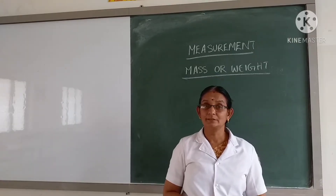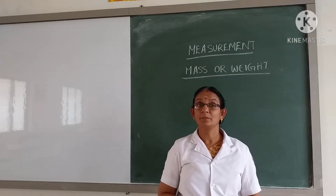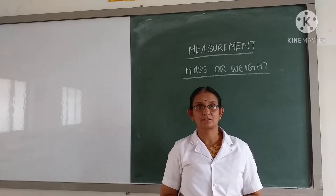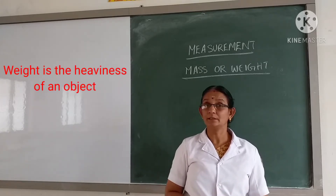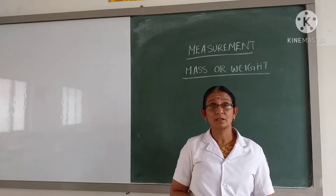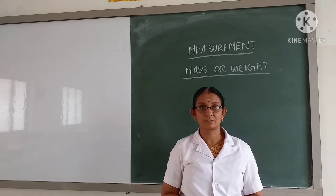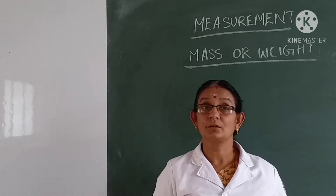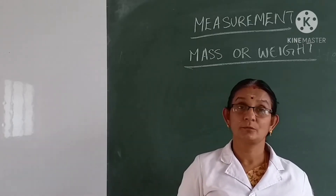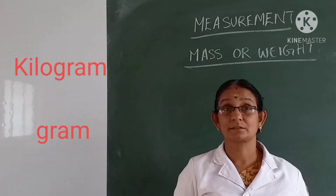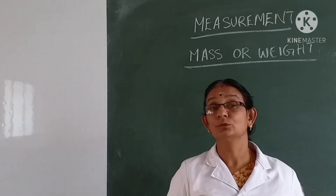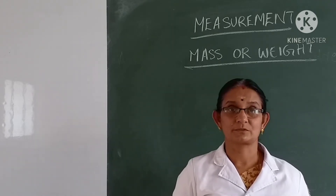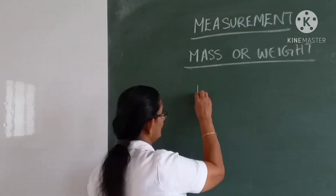Let us learn about the measurement of mass or weight. Do you know what weight is? Weight is the heaviness of an object — it tells us how heavy an object is. You already know that the standard units of mass or weight are kilogram and gram. One kilogram is equal to one thousand grams.